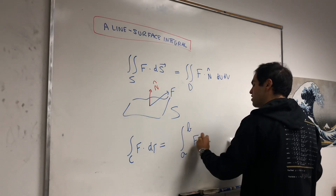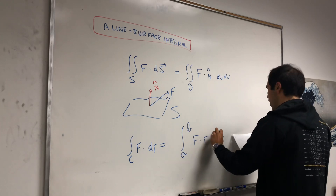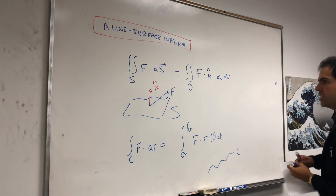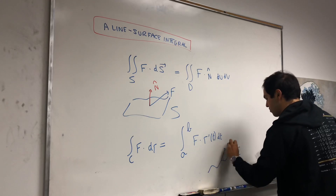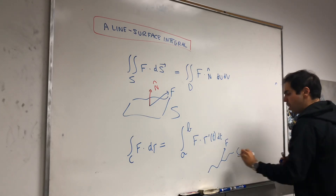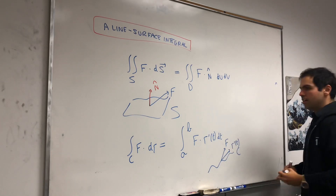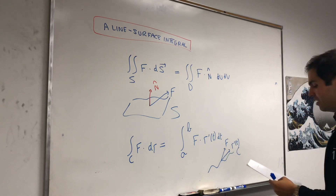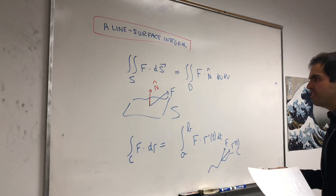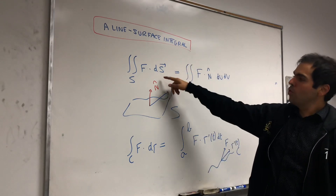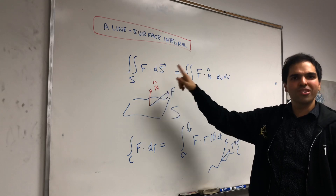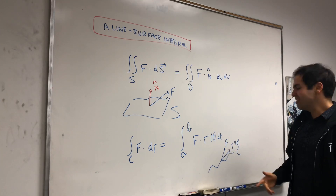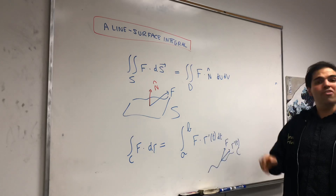The reason the previous analogy doesn't work for line integrals is that for line integrals, you don't dot with a normal vector — you dot with the direction vector. The line integral is defined to be the integral of F·r'(t) dt. In other words, if you have a curve C and a vector field F, you're just dotting with the direction vector. Whereas for the surface integral, you have to dot with the normal vector. So the question is: how do we remedy this?